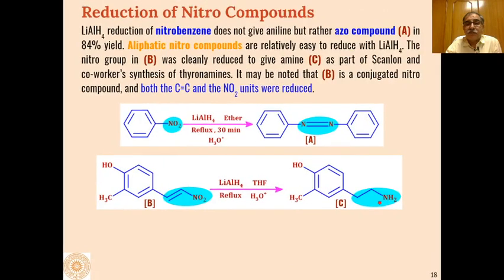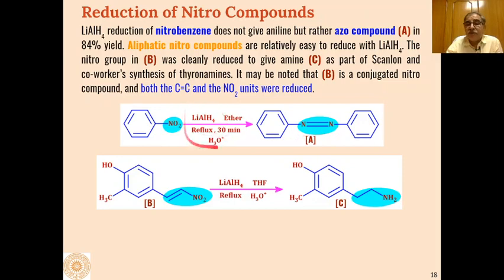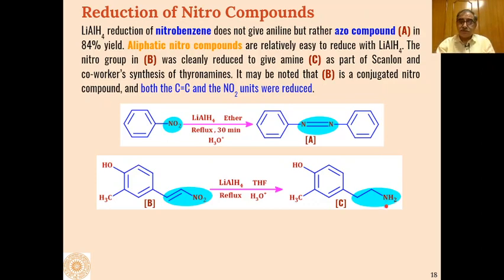For nitro groups: aryl nitro compounds are converted into azo compounds (C=N–N=C), where two molecules of nitrobenzene combine to give azobenzene on refluxing with LAH. Alpha,beta-unsaturated nitro compounds are reduced to primary amines, with both the N–O bond and the C=C bond reduced. Alkyl nitro compounds also give primary amines as the product.